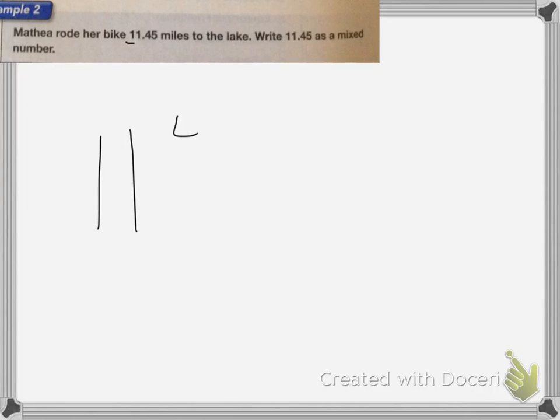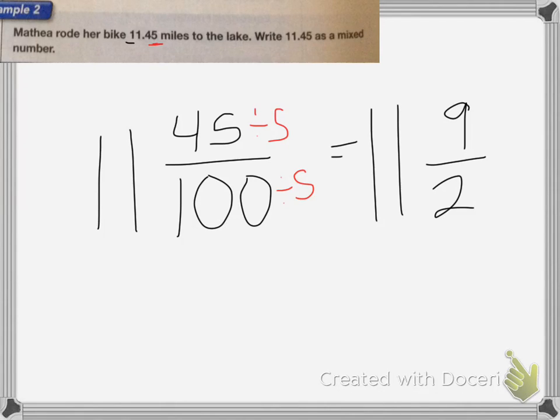The 45 will be in the numerator, and then the denominator is the place value of the 5, which is the hundredths place. So it's going to be 45 over 100. Now I reduce those fractions - you can do that by dividing by a number. I'm going to divide both top and bottom by 5. That's going to equal 11 and 9 twentieths.